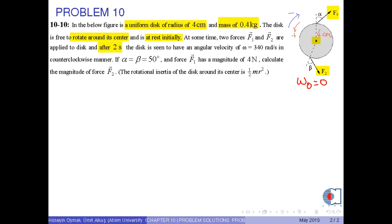After 2 seconds, the disk is seen to have an angular speed of omega equals 340 radians per second in counterclockwise manner. If angles alpha and beta are equal to 50 degrees and force F1 has a magnitude of 4 newtons, calculate the magnitude of force F2. The rotational inertia of the disk around its center is 1/2 m r squared.